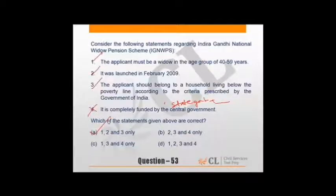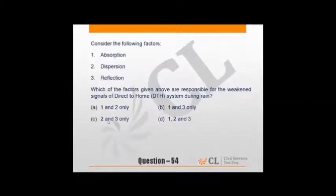Consider the following factors: absorption, dispersion, and reflection. Which factors are responsible for weakened signals in direct-to-home system during rain? Absorption - less absorption is there. Dispersion - of course dispersion is more, the signal attenuation given by rain wave. Absorption by raindrops, signal scattering due to refraction and diffraction of electromagnetic waves in and around raindrops. So absorption and wide dispersion is there, but reflection certainly not the reason. 1 and 2 stand correct.